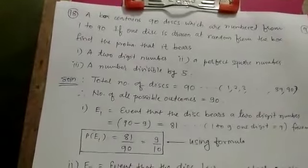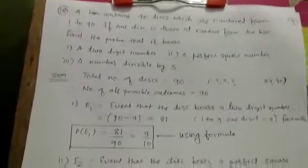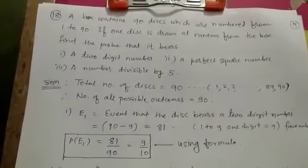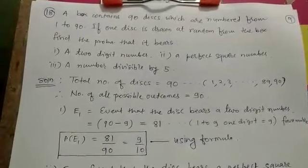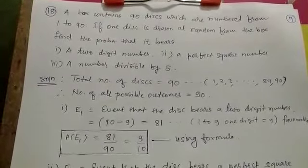Hello student, now we are going to study problem number 18 from your textbook. In your textbook it is given that a box contains 90 discs which are numbered from 1 to 90. How many discs are there?